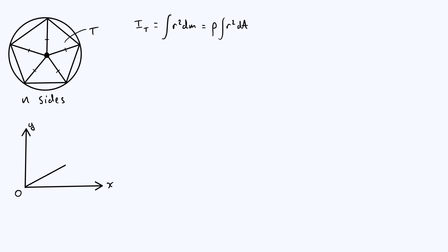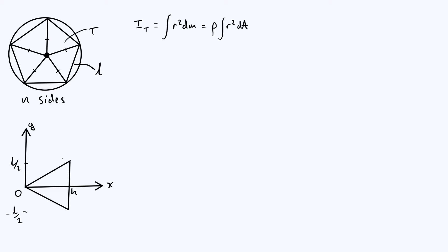We're going to take shape T and rotate it so that its axis of symmetry — its line of symmetry — is the x-axis. So I've defined the axis so that x lies along the line of symmetry. Now we need to define some parameters that describe our polygon. If we call the side length L, then the y-value at the top of shape T is going to be L/2, and the y-value at the bottom is minus L/2. For the purpose of doing the integral, I'll also define h, the height of the triangle, as the x-value at the far end.